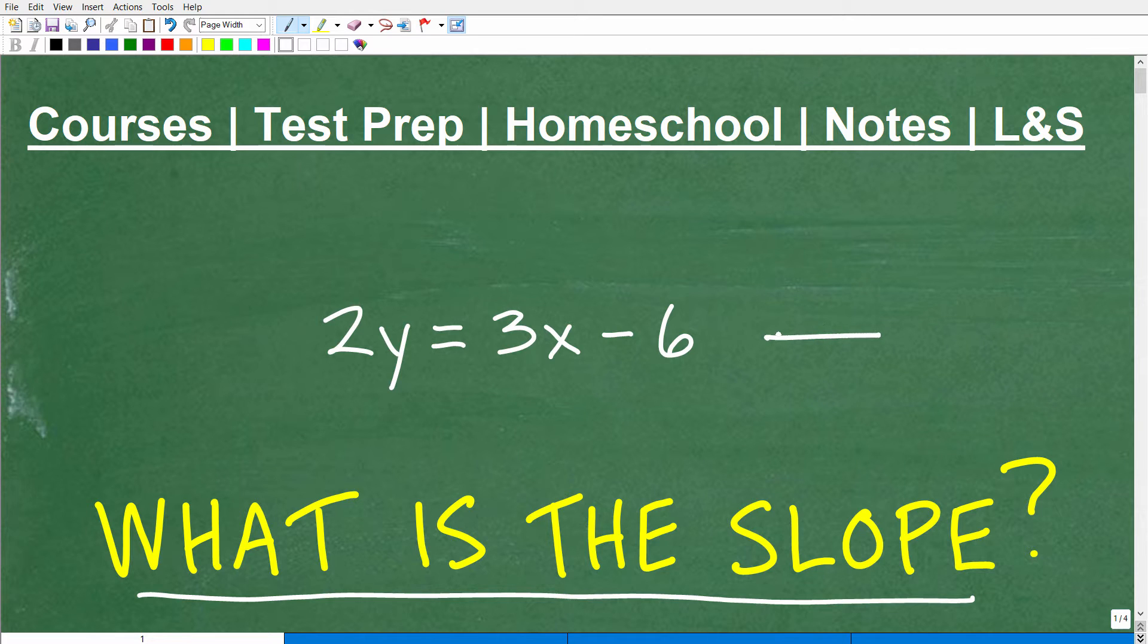What is the slope of the line? So here we have a two-variable linear equation, but basically you can think of this as a line that you could graph on the x-y coordinate plane. Now, the question of course is, what is the slope?